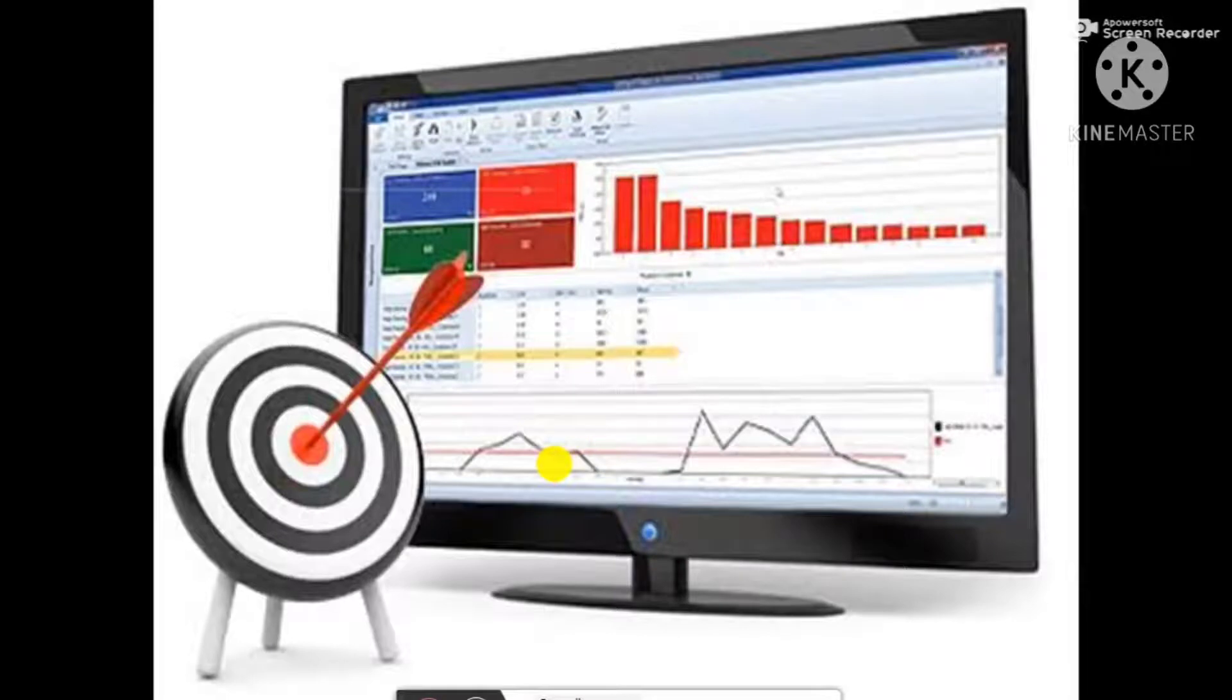Now, computers are very accurate. Computer never makes mistakes. Mistakes can be made by the user but never by the computer. Mistakes can be made by us but not by the computer.